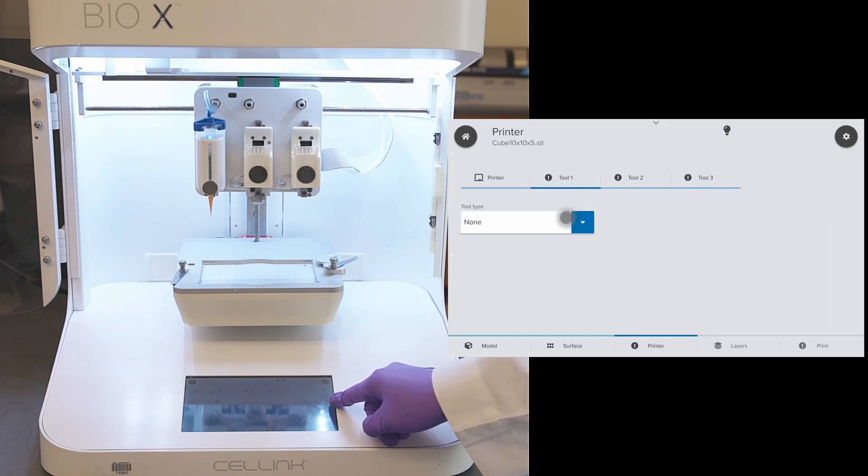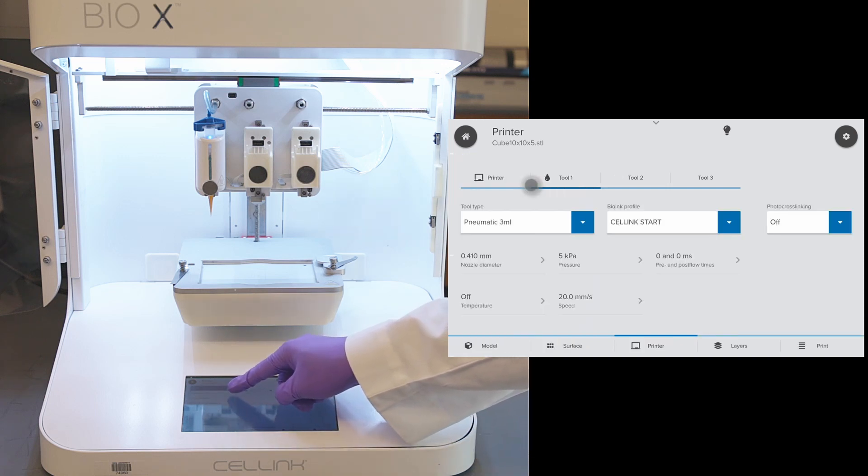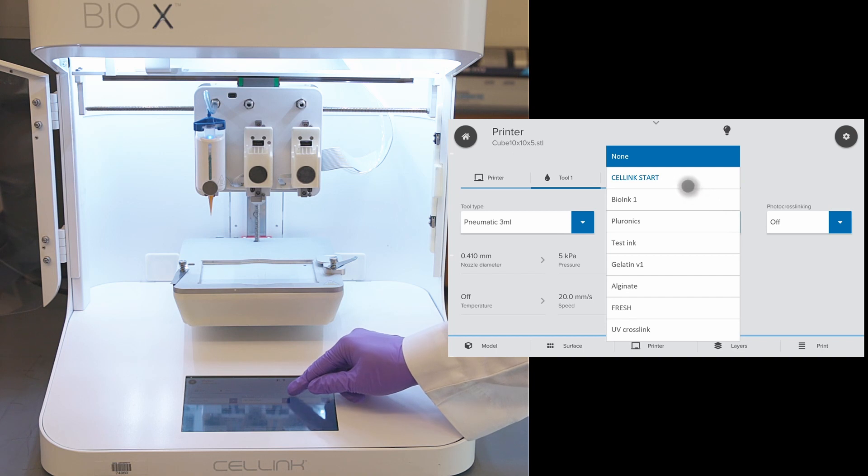Next, we click on tool 1. Click on tool type and automatically the type of printhead will be highlighted. Here, it is a pneumatic 3 milliliter printhead. Next, we have the bio-ink profile, which is Cellink Start material, or we can choose from one of these materials. Or, create a new profile so that we don't have to enter these printing parameters every time.